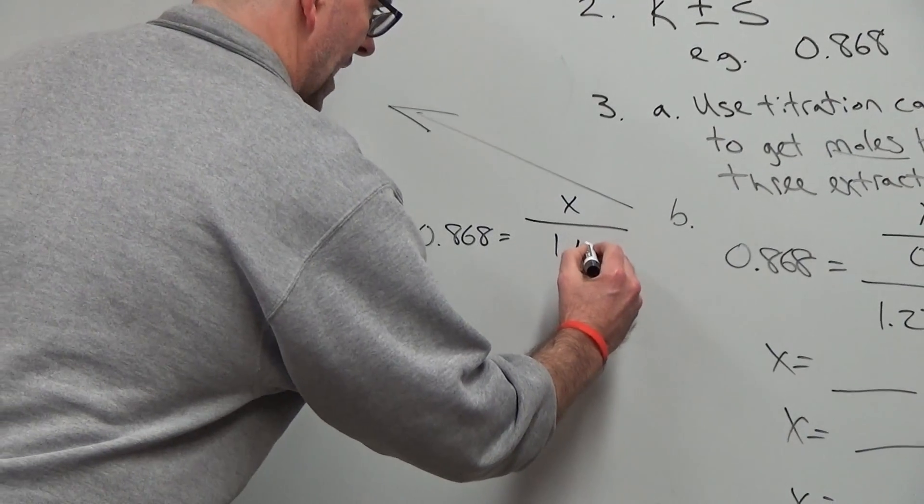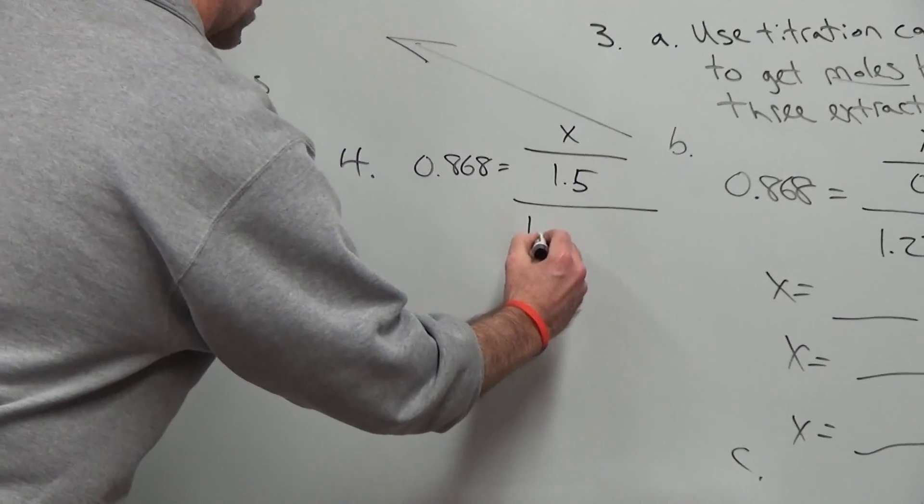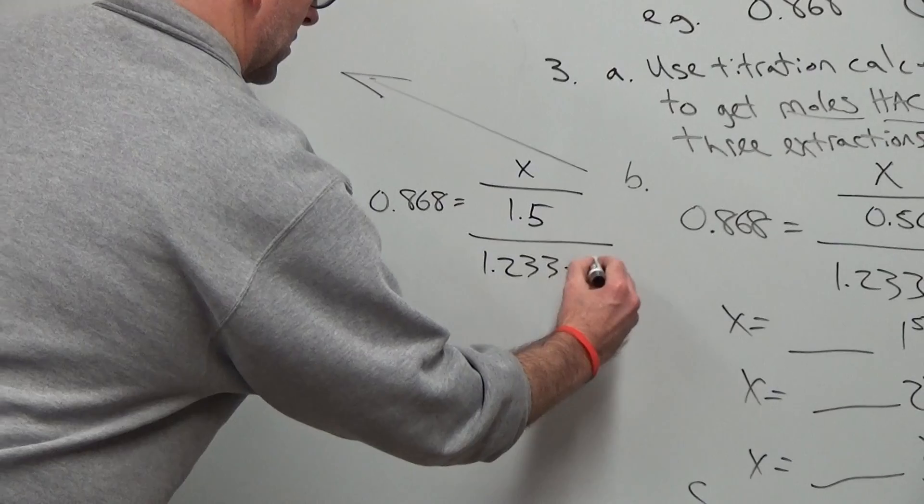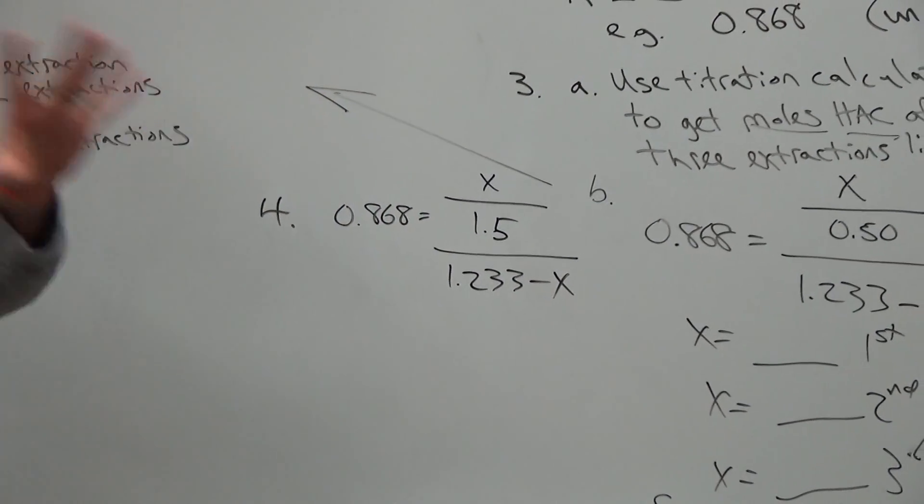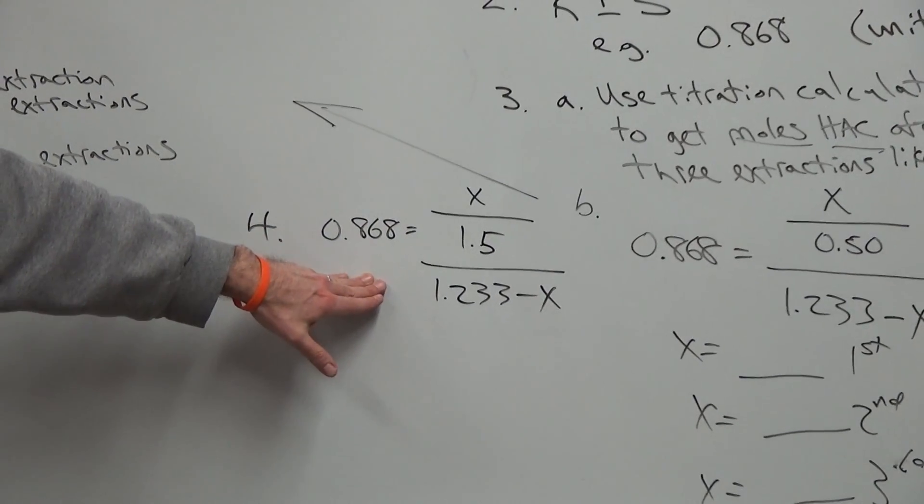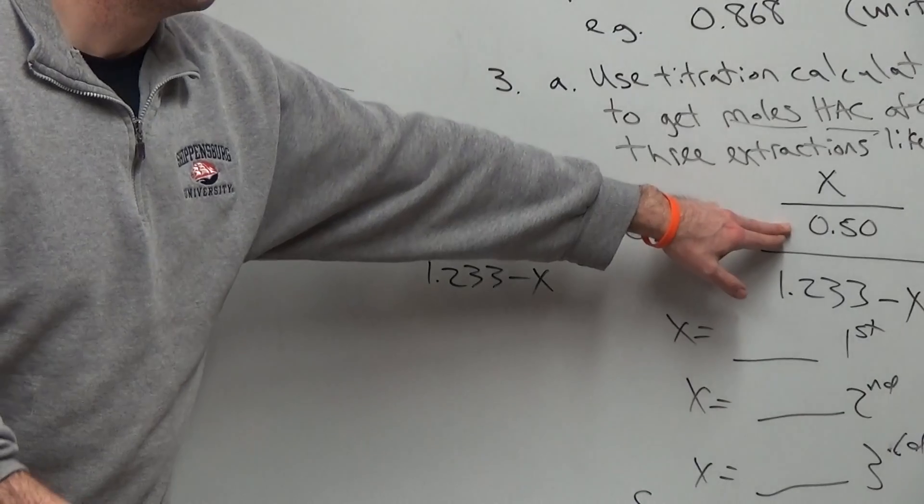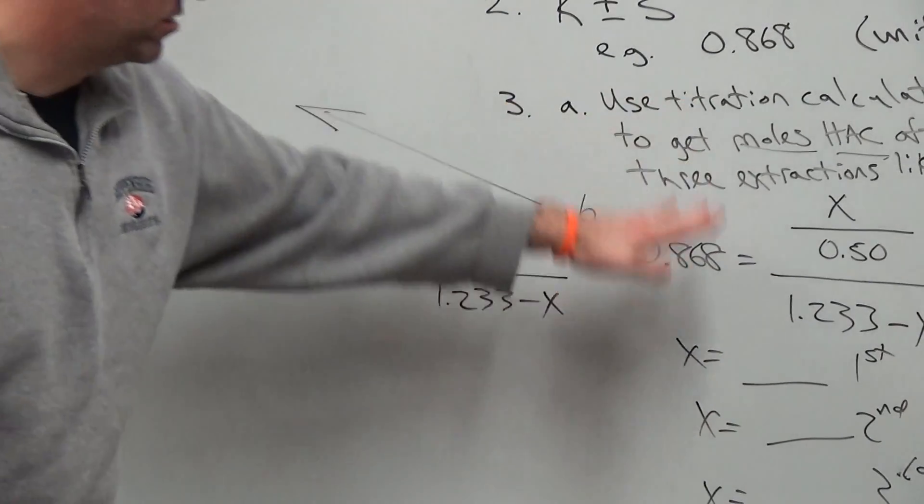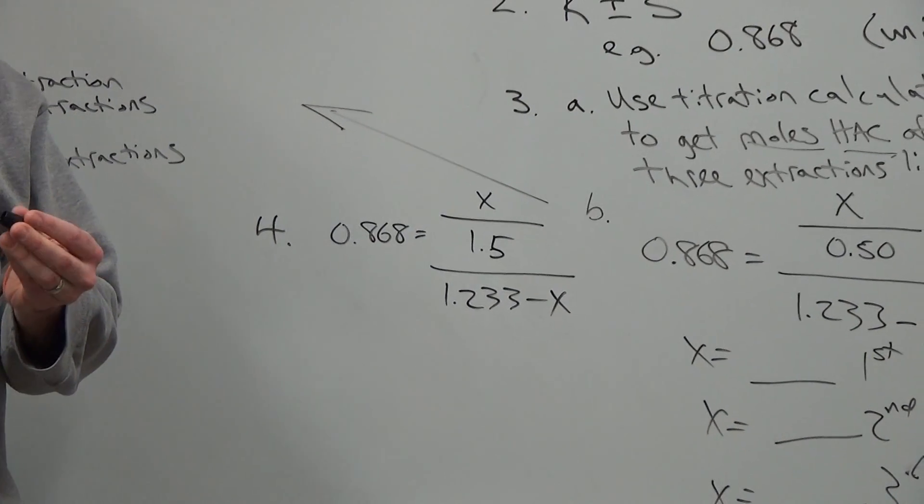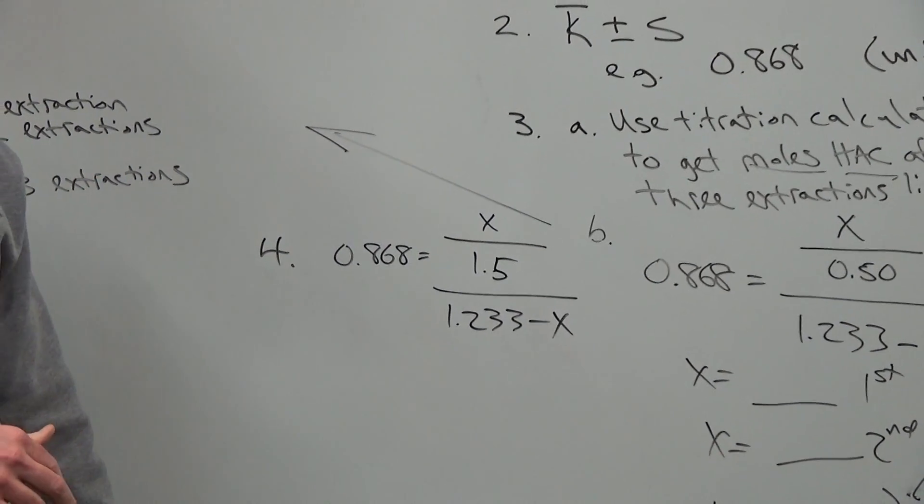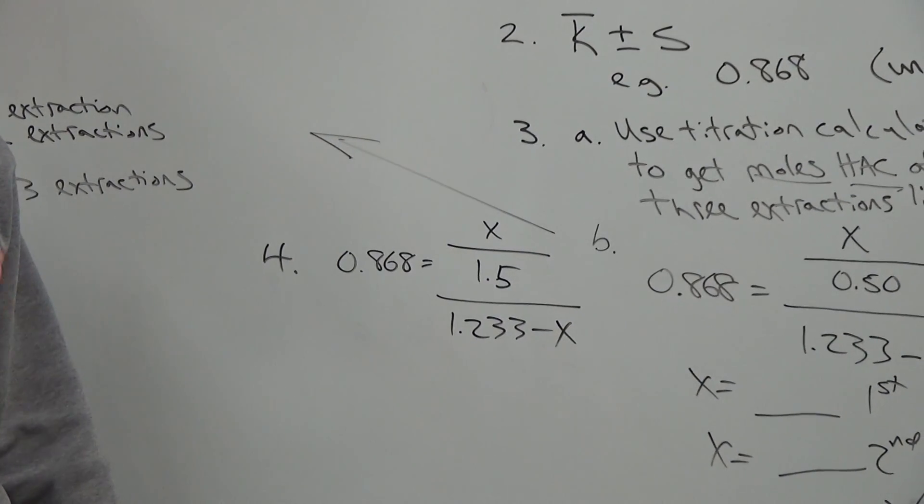So you're going to compare 1.5 mils. So you'll just do this calculation once, not three times, just once. How does this single extraction with all of these volumes combined, so .5 times 3, how does that compare to three successive extractions? That's kind of what you're doing here. That's the big picture. It's easy to get lost in the algebra, what it is you're trying to do chemically, but I think that should help.